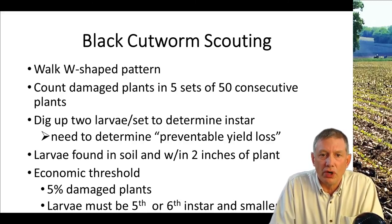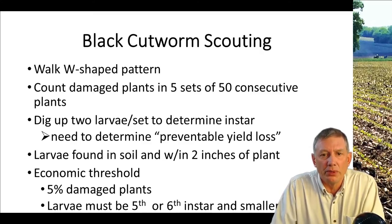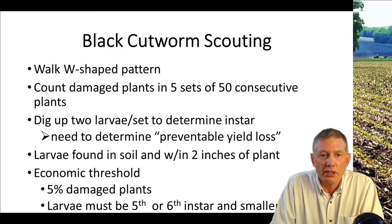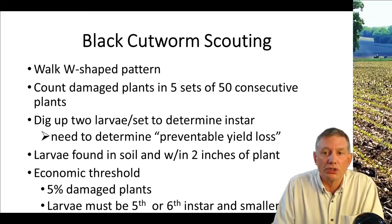Those larvae will be found usually close to a damaged plant and in the soil within about two inches of the plant, typically at the line between dry soil and wet soil. The economic threshold for black cutworms is when you find five percent damaged plants and the larvae are fifth or sixth instar or smaller.